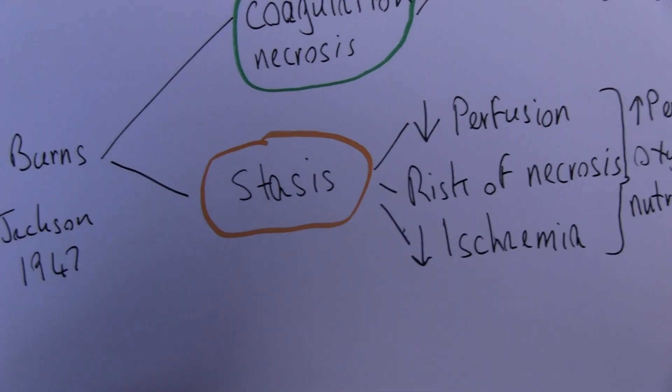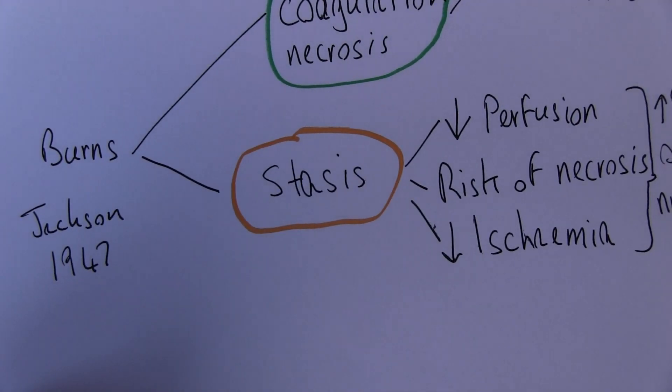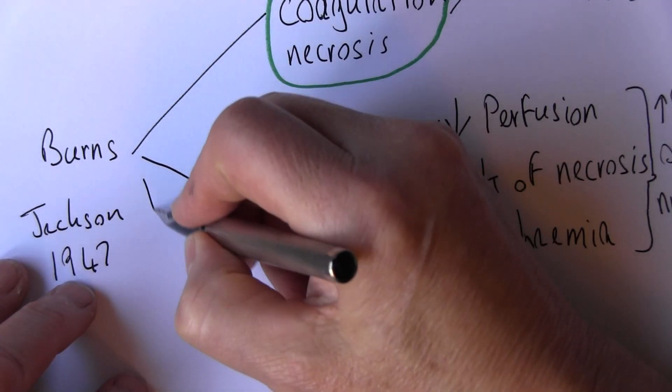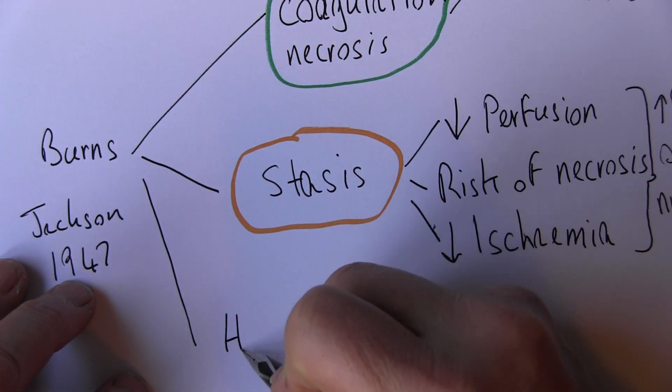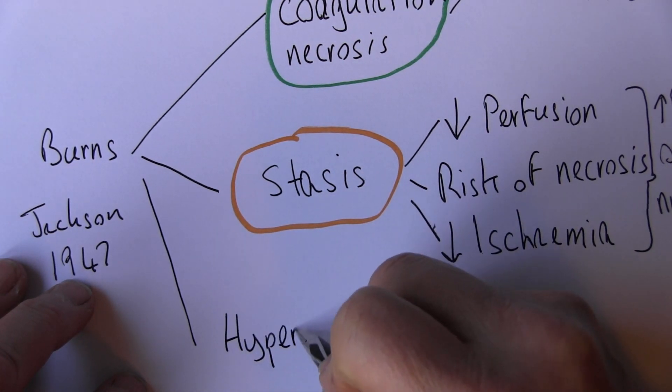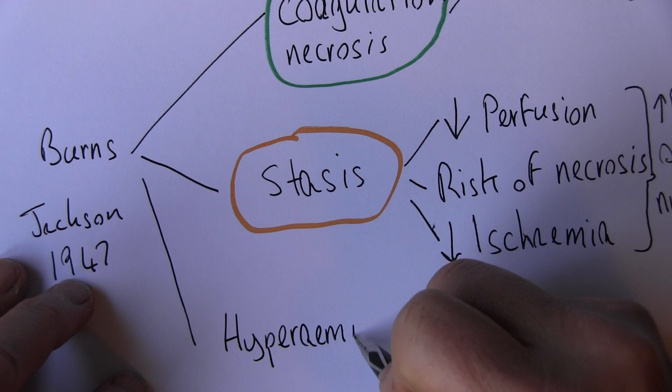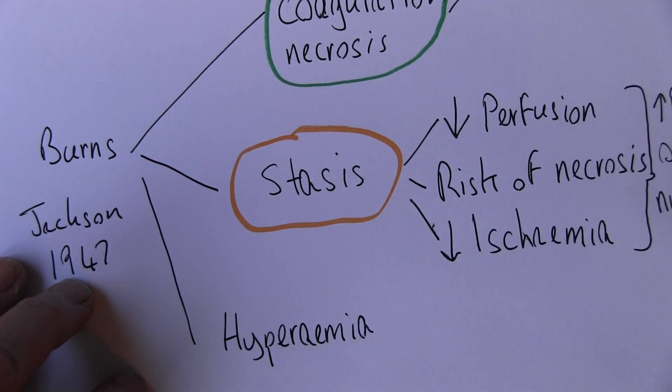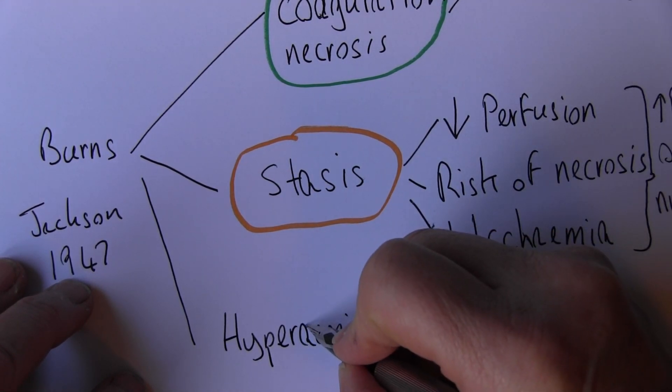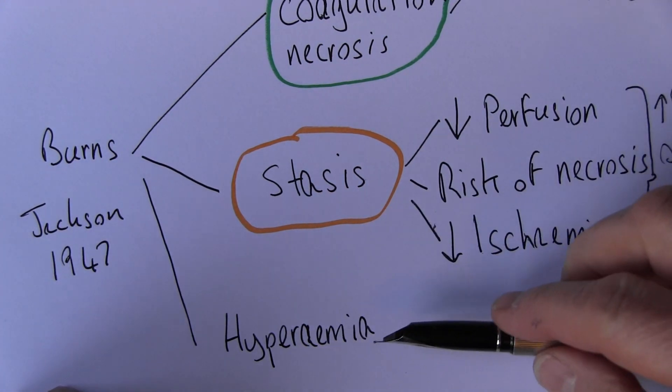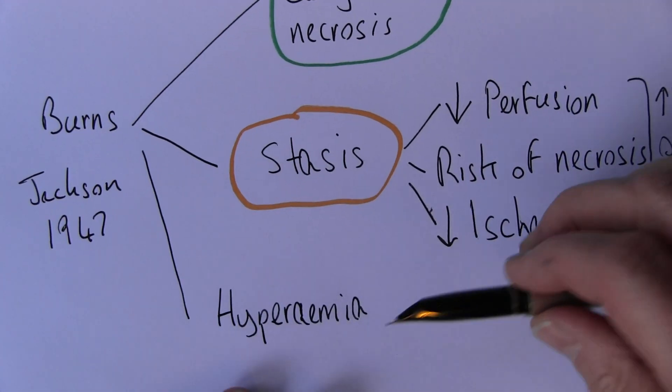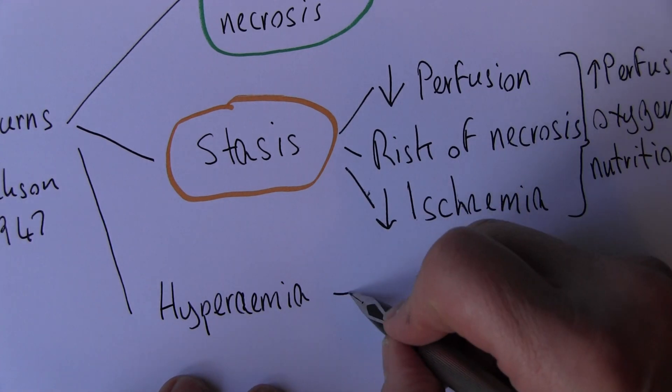But it is up for grabs, it largely depends on the management, how well the area is managed. Then the final area, the area of hyperemia - in the States of course you don't have that 'A' as we do in the UK. The area of hyperemia is where there's an inflammatory reaction, so this really is an inflammatory zone.